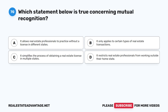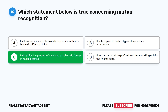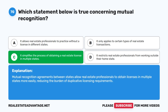Question 70: Which statement below is true concerning mutual recognition? A. It allows real estate professionals to practice without a license in different states. B. It only applies to certain types of real estate transactions. C. It simplifies the process of obtaining a real estate license in multiple states. D. It restricts real estate professionals from working outside their home state. The correct answer is C. Mutual recognition agreements between states allow real estate professionals to obtain licenses in multiple states more easily, reducing the burden of duplicative licensing requirements.